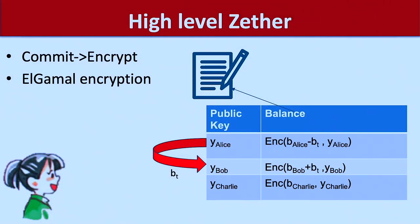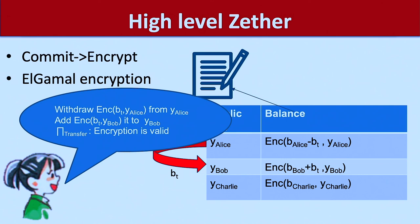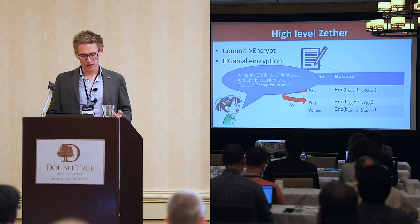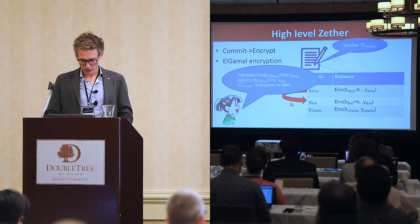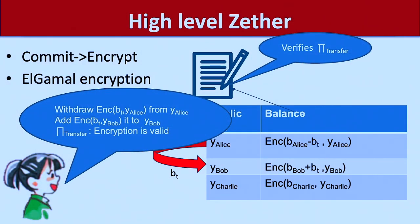The solution: instead of commitments, we're going to use encryptions — specifically ElGamal encryptions in the exponent, which also have homomorphic properties. Alice needs to prove that she is subtracting the same amount from her account that she's adding to Bob's account, and that all of the encryptions are valid. When Bob comes along, he can decrypt using his secret key the amounts being transferred. The smart contract just checks that the transfer is valid, and Bob will always be able to decrypt his own amount and spend it. So this poisoning attack doesn't apply anymore.